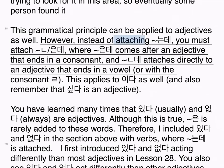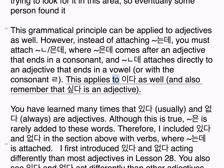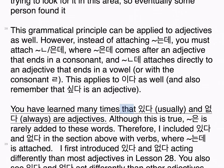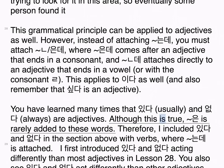However, instead of attaching 는데, you must attach 은데, where 은데 comes after an adjective that ends in a consonant, and 는데 attaches directly to an adjective that ends in a vowel or with the consonant ㄹ. This applies to 이다 as well, and also remember that 없다 and 있다 are adjectives. You have learned many times that 있다 and 없다 are adjectives, although 은데 is rarely added to these words.